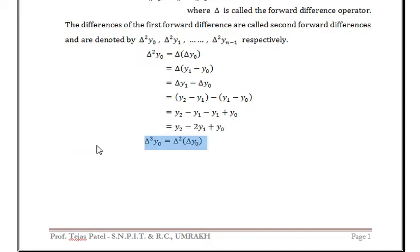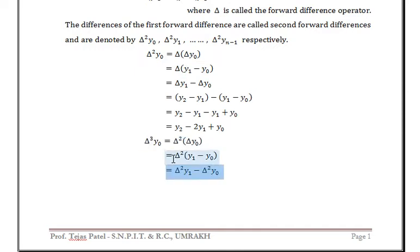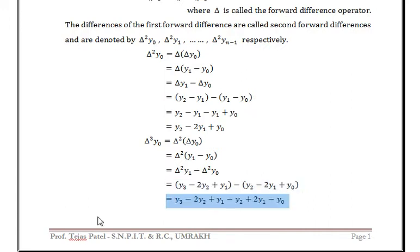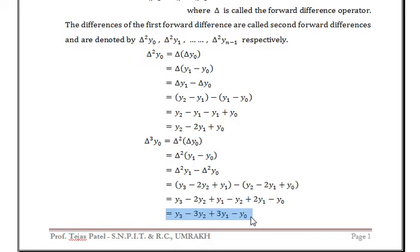Similarly for higher order, Δ³y0 = Δ²(Δy0), and since Δy0 = y1 - y0, we have Δ²y1 - Δ²y0. Now Δ²y1 = y3 - 2y2 + y1, and Δ²y0 = y2 - 2y1 + y0. So Δ³y0 = y3 - 3y2 + 3y1 - y0.